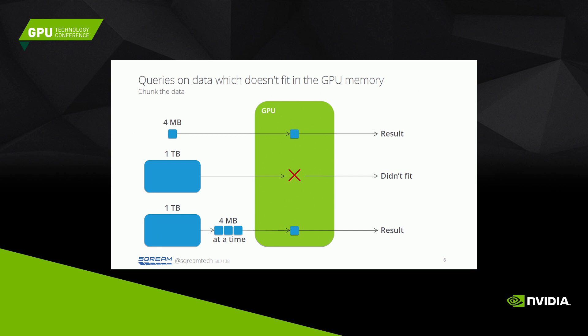This is an illustration of the chunking idea. In the first row, we're taking a small amount of data, loading it onto the GPU, processing it, and producing the result. In the second row, we have a data size of one terabyte, and there are no plans for NVIDIA to implement a GPU with a terabyte of memory, so it won't fit. In the third row, we simply break the one terabyte of data into four-megabyte chunks and process them one at a time on the GPU.